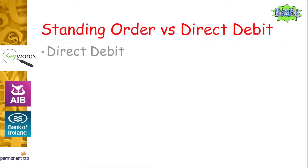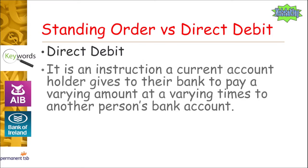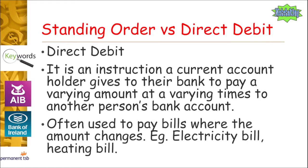A direct debit, on the other hand, is similar in that it's also only open to current account holders, and it's also an instruction to tell the bank to pay someone money to their bank account. The difference is that with a direct debit the amount can change and the time period can change. So can you think of anything you might use that for? An electricity bill or a heating bill would be a good example.